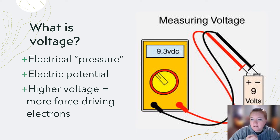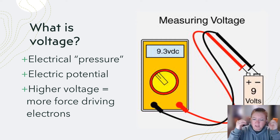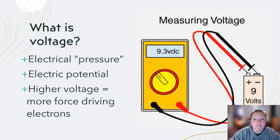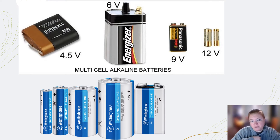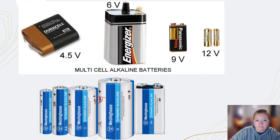Voltage is a little different. Voltage is electric potential, or electric pressure — think of it as a force pushing or driving the electrons. You should be familiar with voltage. Most batteries that we use, if you notice, have the same voltage: 1.5 volts. From triple-A to D batteries, they're all 1.5 volts.